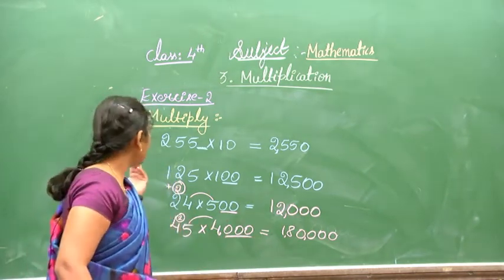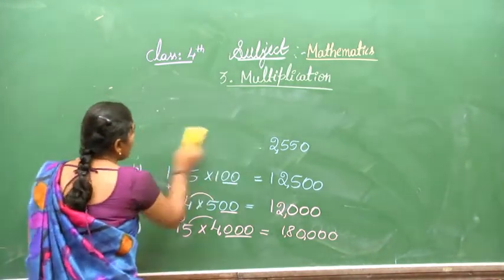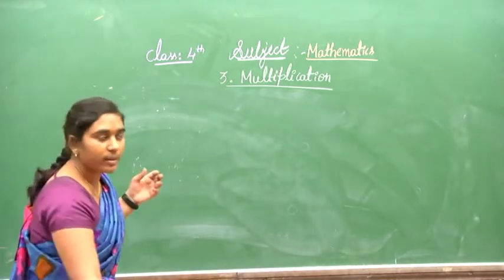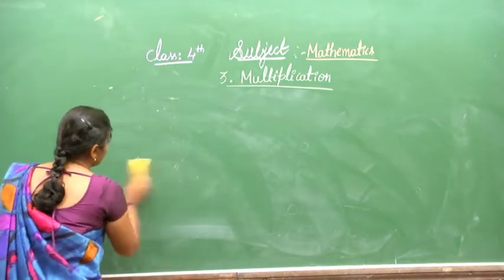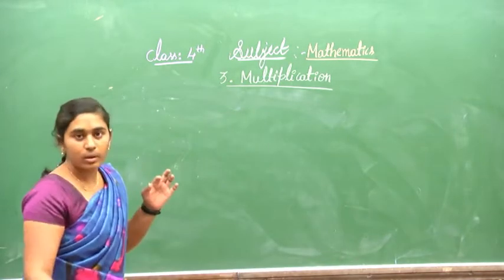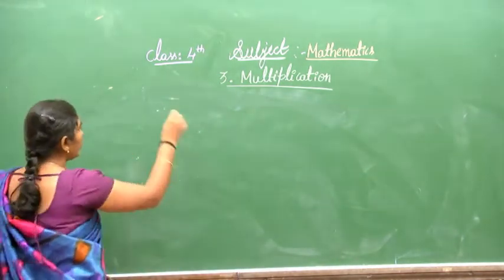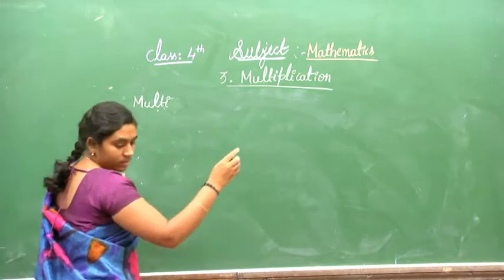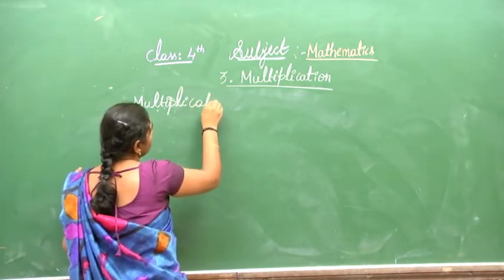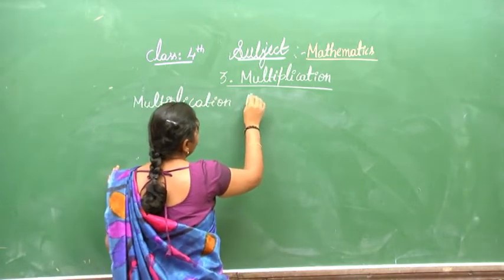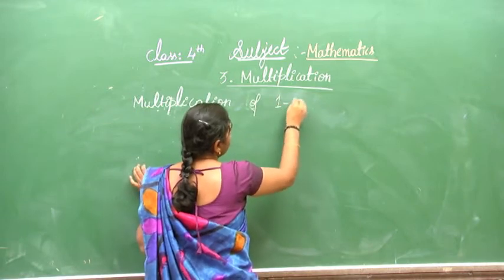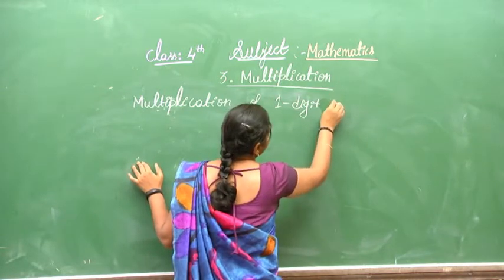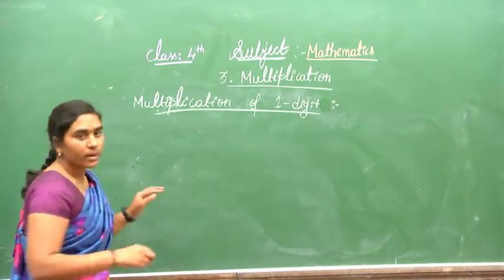Now the next topic is multiplication by a 1-digit number — multiplying a 4-digit number with a 1-digit number.